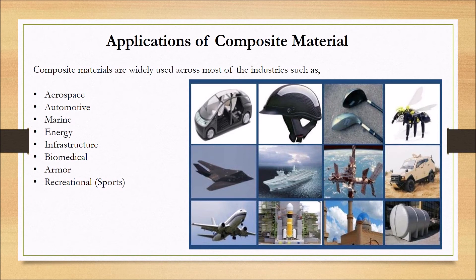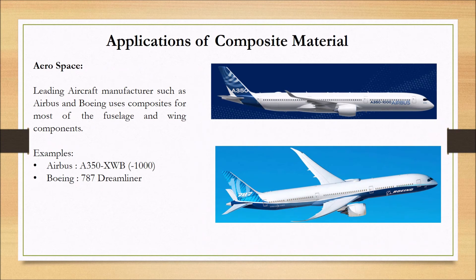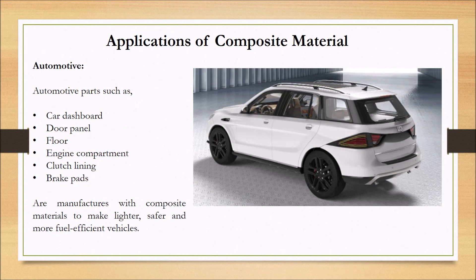Coming to applications of composite materials — composites are widely used in industries such as aerospace, automotive, marine, energy, infrastructure, biomedical, and so on. In the aerospace industry, leading aircraft manufacturers use composite materials for most fuselage components; for example, the Airbus A350 and Boeing 787 use composites for most of their parts. In the automotive industry, composites are used in parts like car dashboards, door panels, and so on — mostly to make vehicles lightweight, fuel-efficient, and with better load-carrying capability.